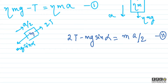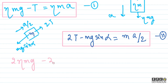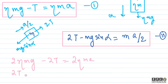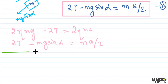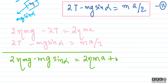For body 1, the equation is: 2T minus mg·sin(alpha) equals m·(a/2) — this is equation number 2. To eliminate tension, we multiply equation 1 by 2 and add equation 2. The tension terms cancel out.